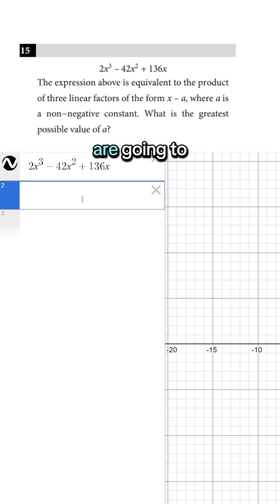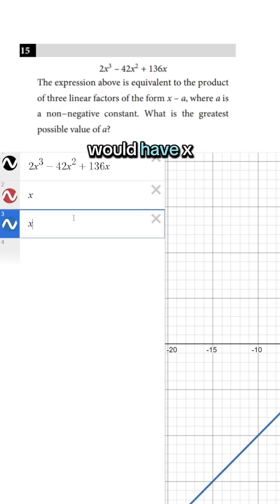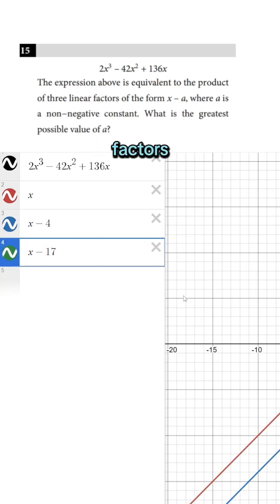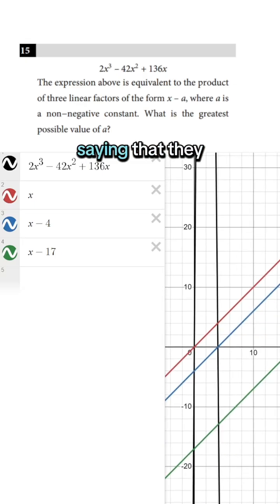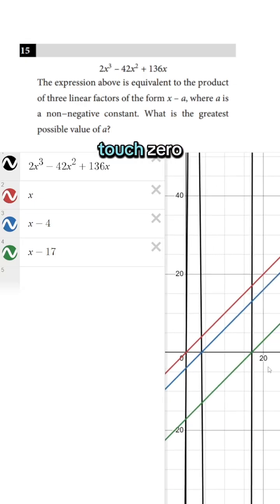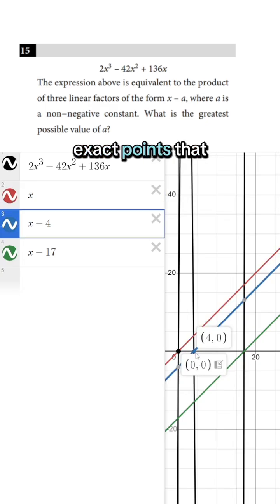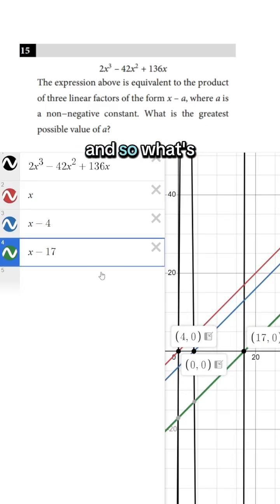So it looks like my factors are going to just be x, and then I would have x minus 4, and then I'm going to have x minus 17. Those are my factors. And we can prove that by saying that they are going to touch 0 at the same exact points that the actual graph does. And so what's the greatest possible value of a? The greatest one was 17, so that would be our answer.